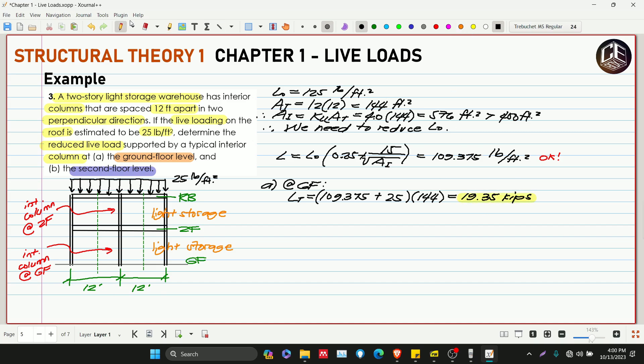And then letter B at second floor. Second floor lang ang dadali nilang nyo is yung galing sa ating RB kasi yun yung dinadala nyo dito. So parang ganito siya, ito yung ating P2F then ito naman yung ating PGF.